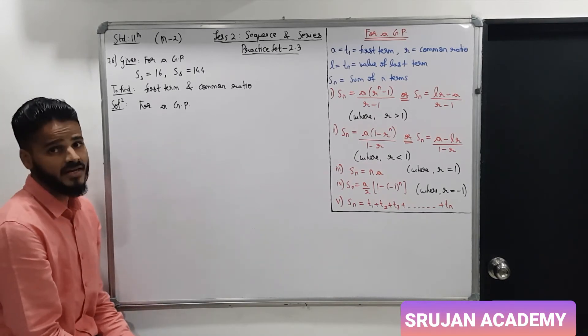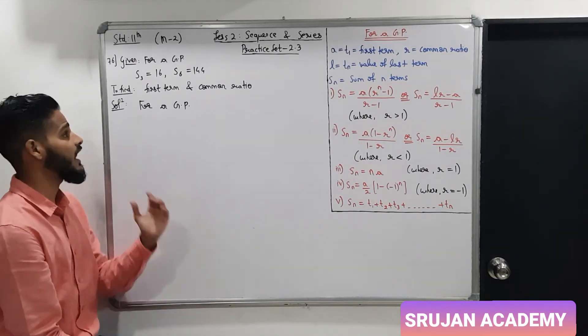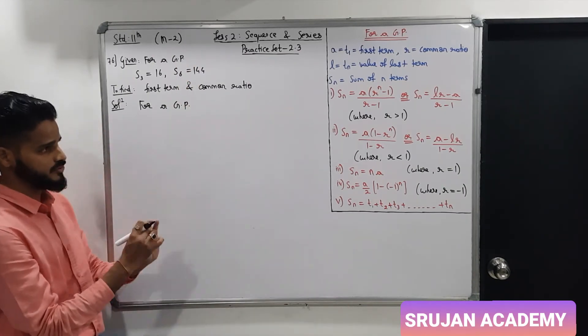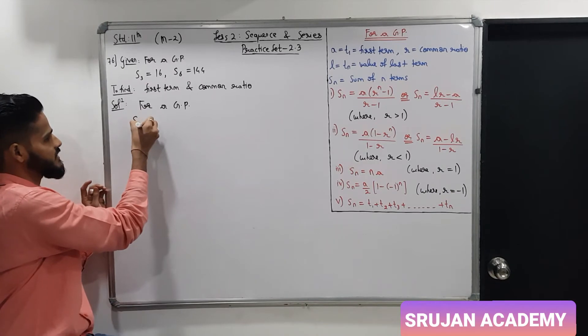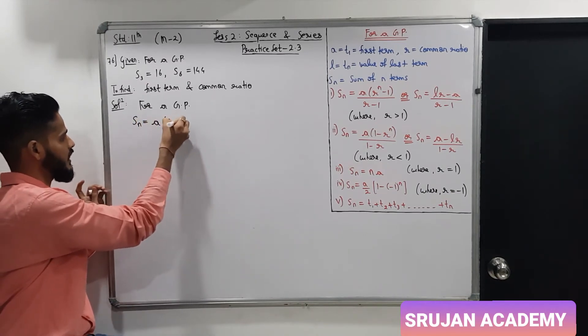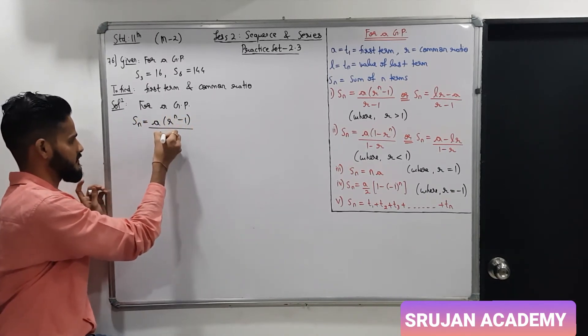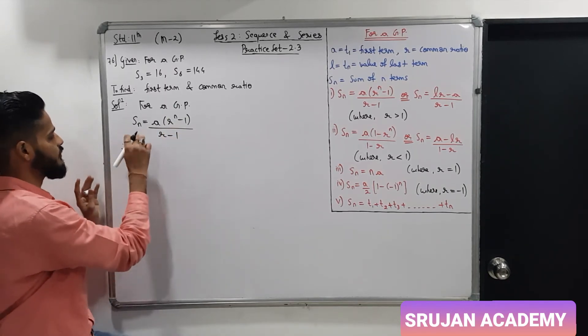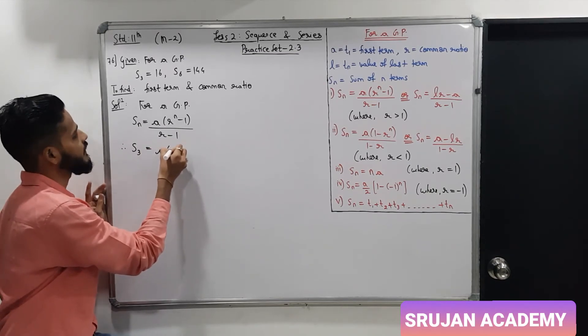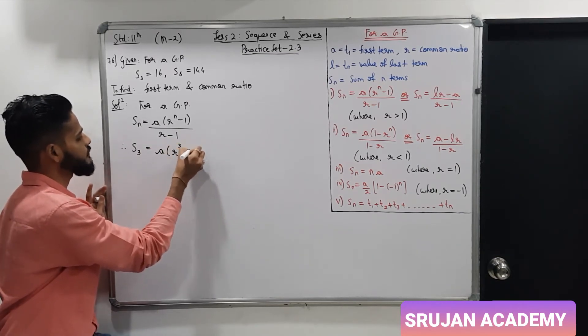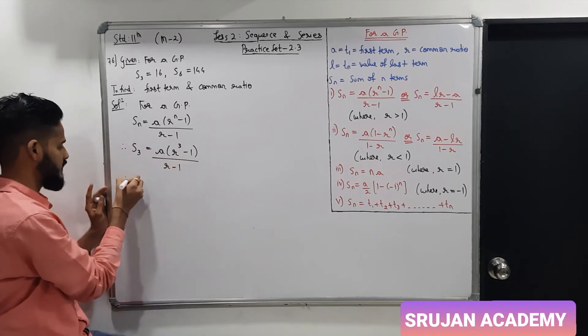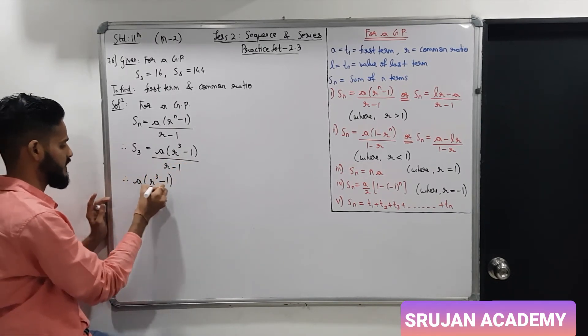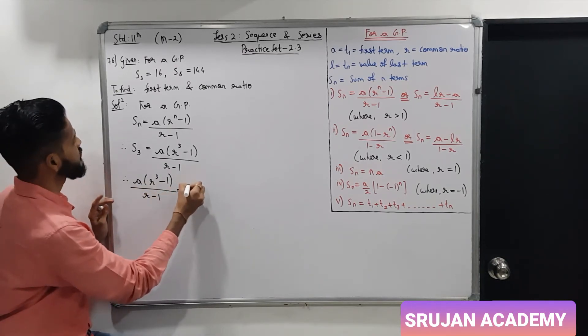For a GP, when R is greater than 1, first formula which is Sn equals a into R raise to n minus 1 upon R minus 1. Now, S3 is sum of first 3 terms. S3 is a into R raise to 3 minus 1 upon R minus 1. So, a into R raise to 2 upon R minus 1 is 16.